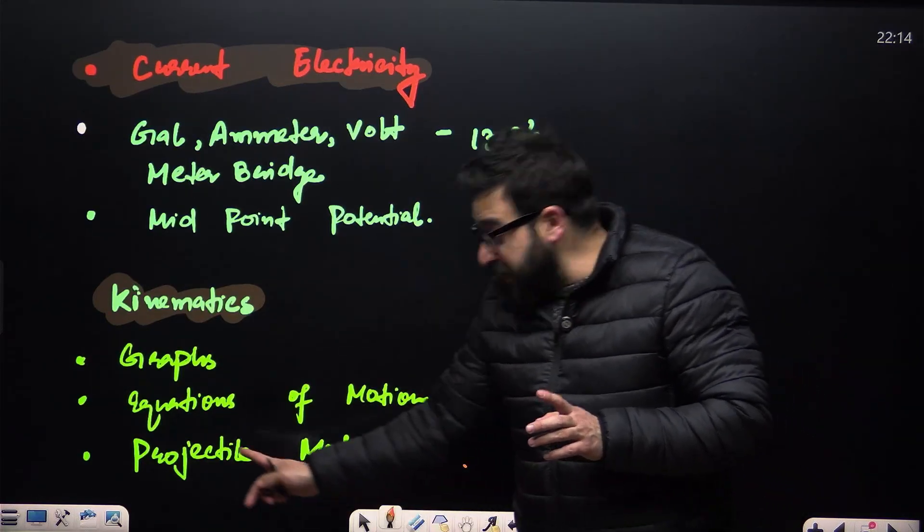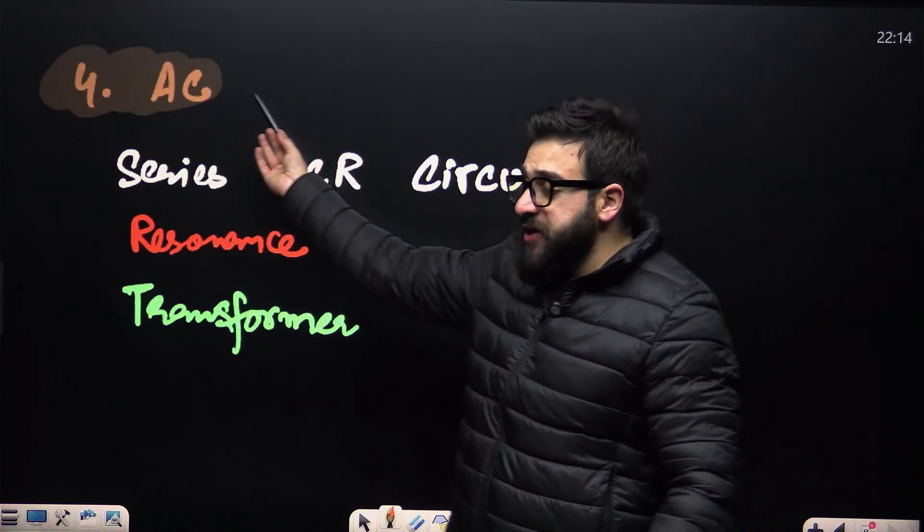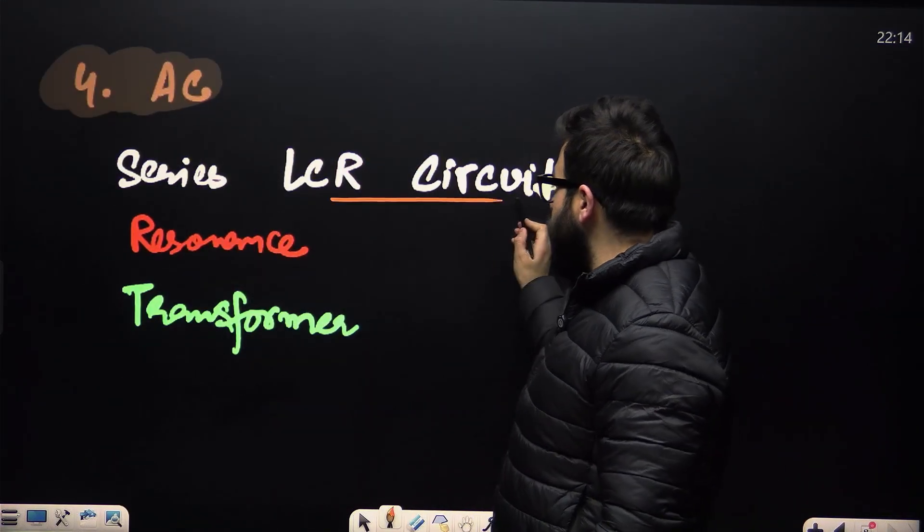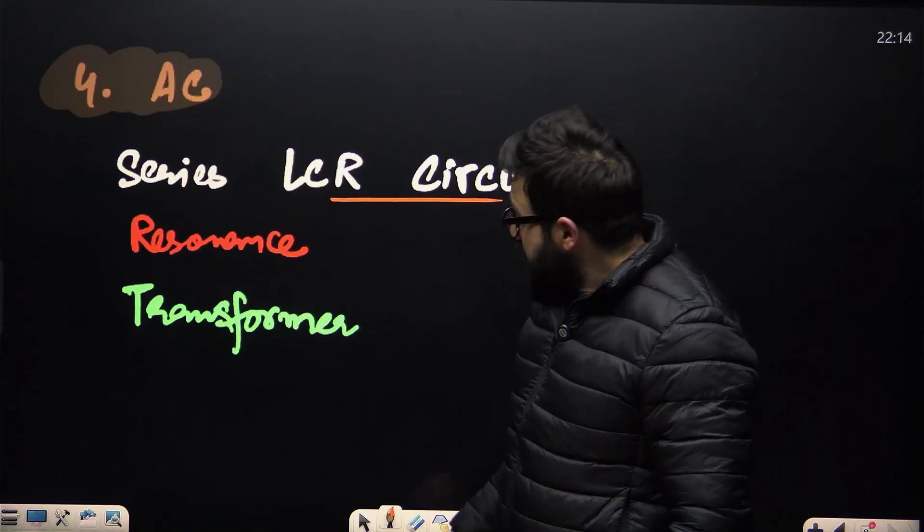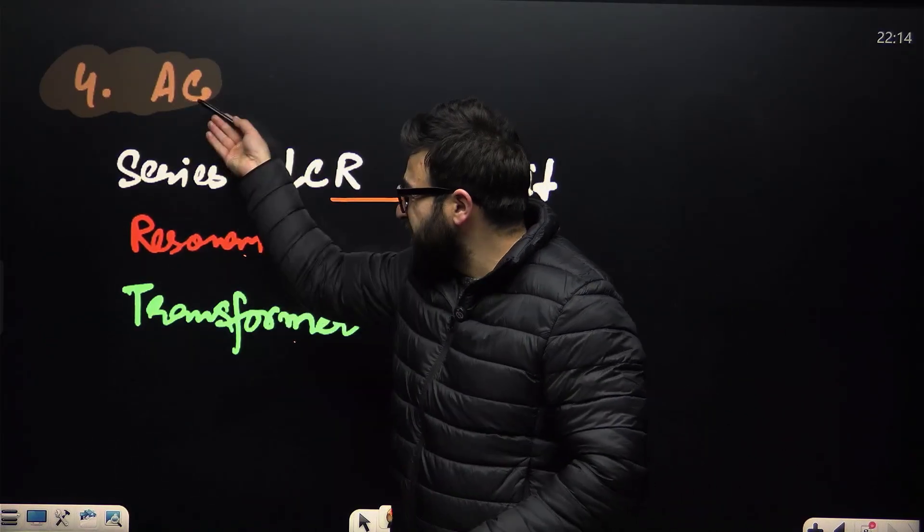And last one I would say, alternating current. From this alternating current, try to look at the series LCR circuit and resonance, extremely important. And transformers - this will hardly take you 30 minutes.